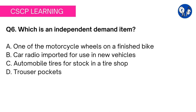Option D: trouser pockets — you can figure this out very easily. Trouser pockets have a dependent demand since nobody will purchase trouser pockets separately. If a manufacturer is producing 100 trousers, he will require 200 trouser pockets, one for each side. So the demand for trouser pockets is dependent upon the number of trousers produced.